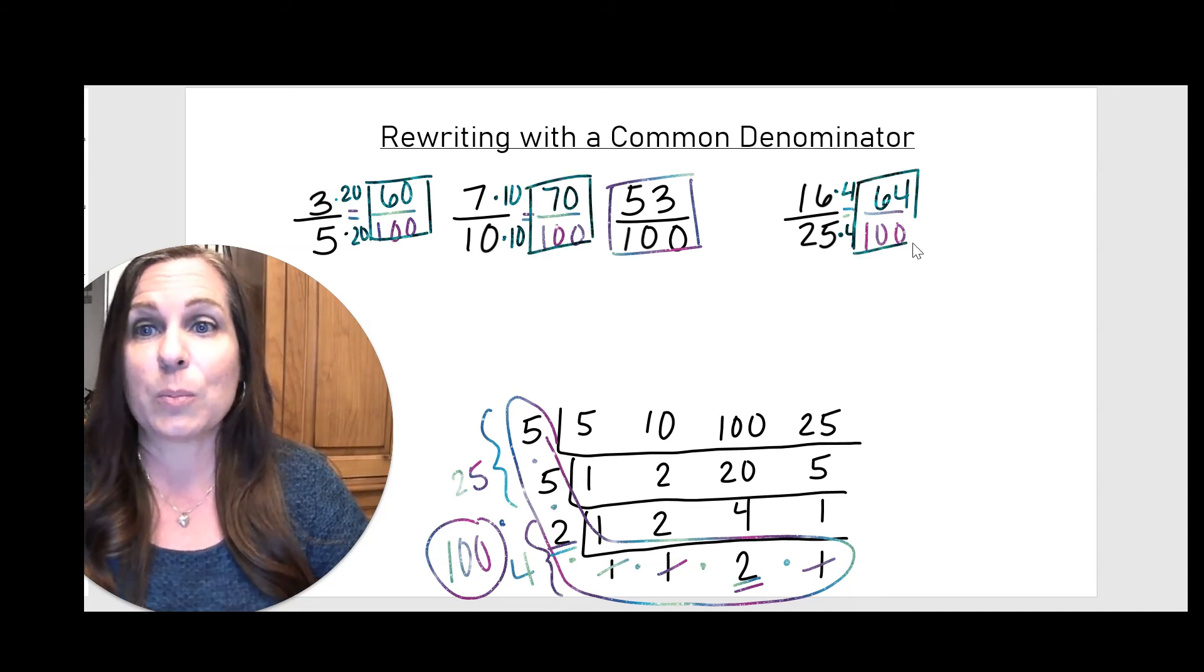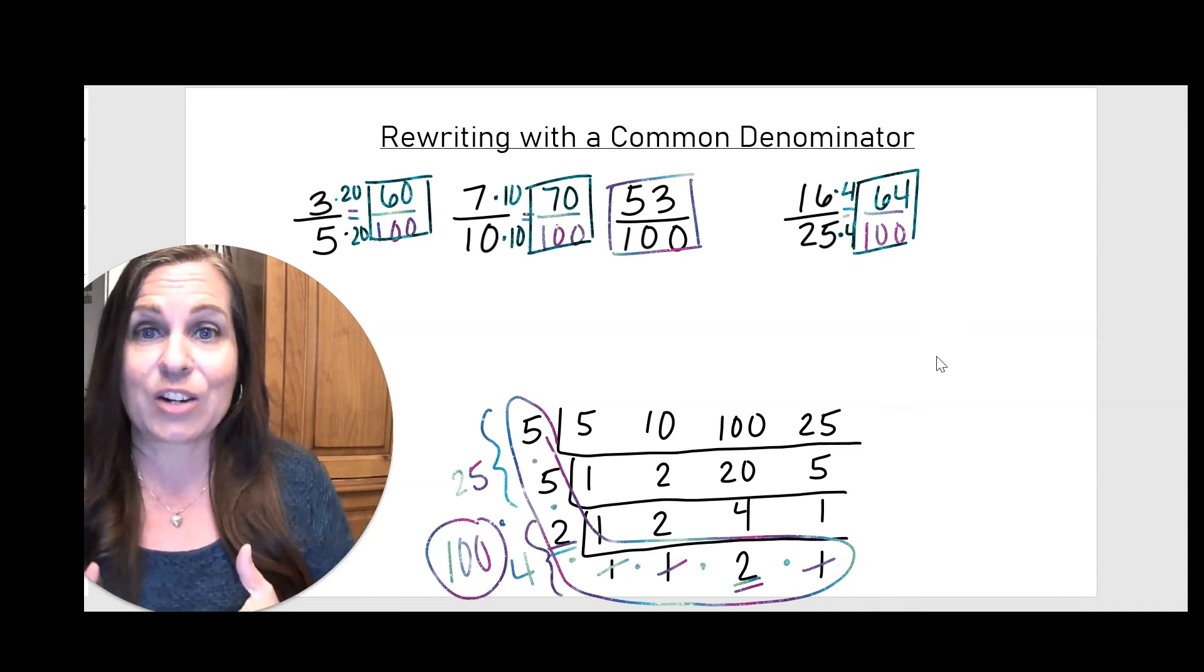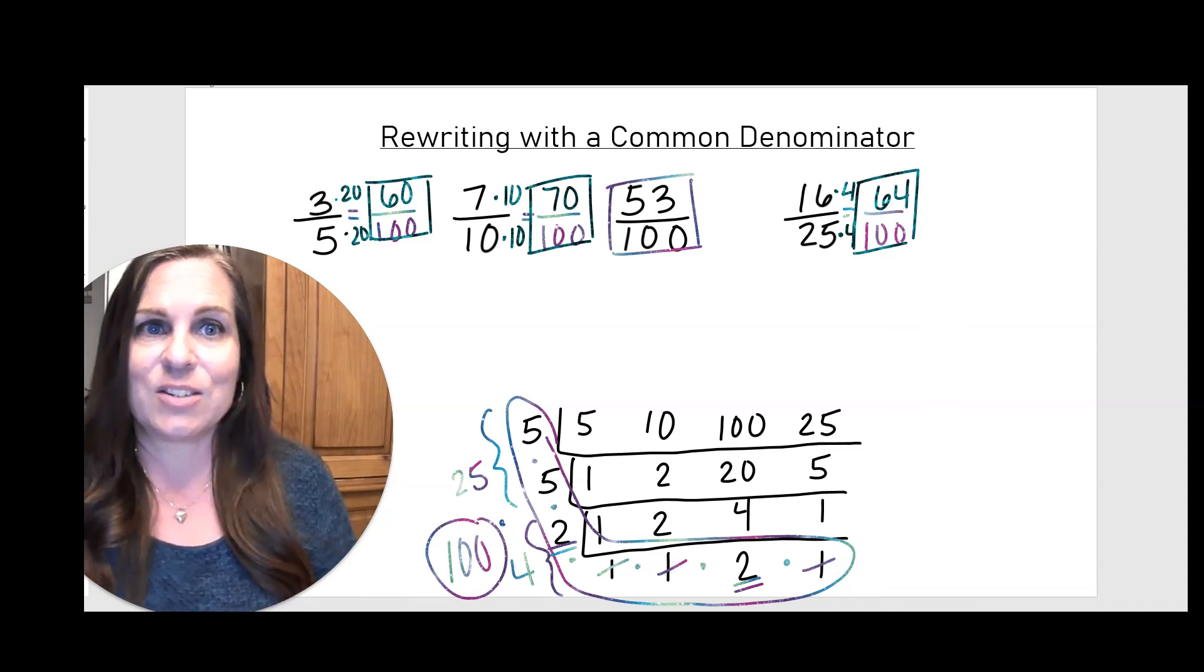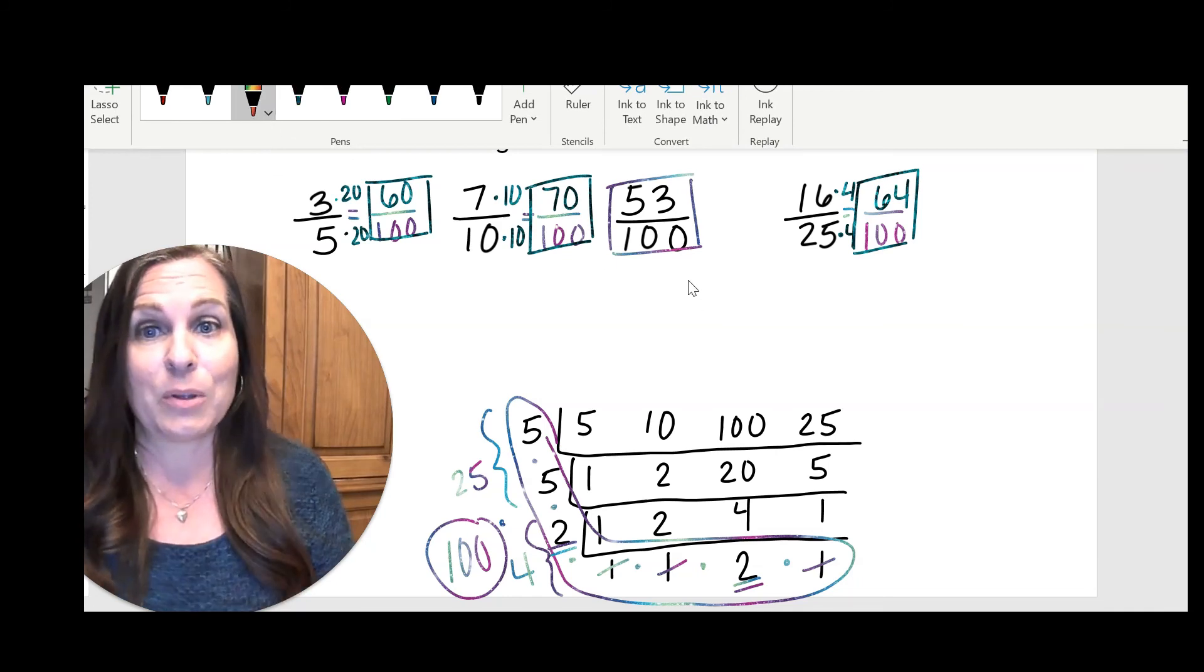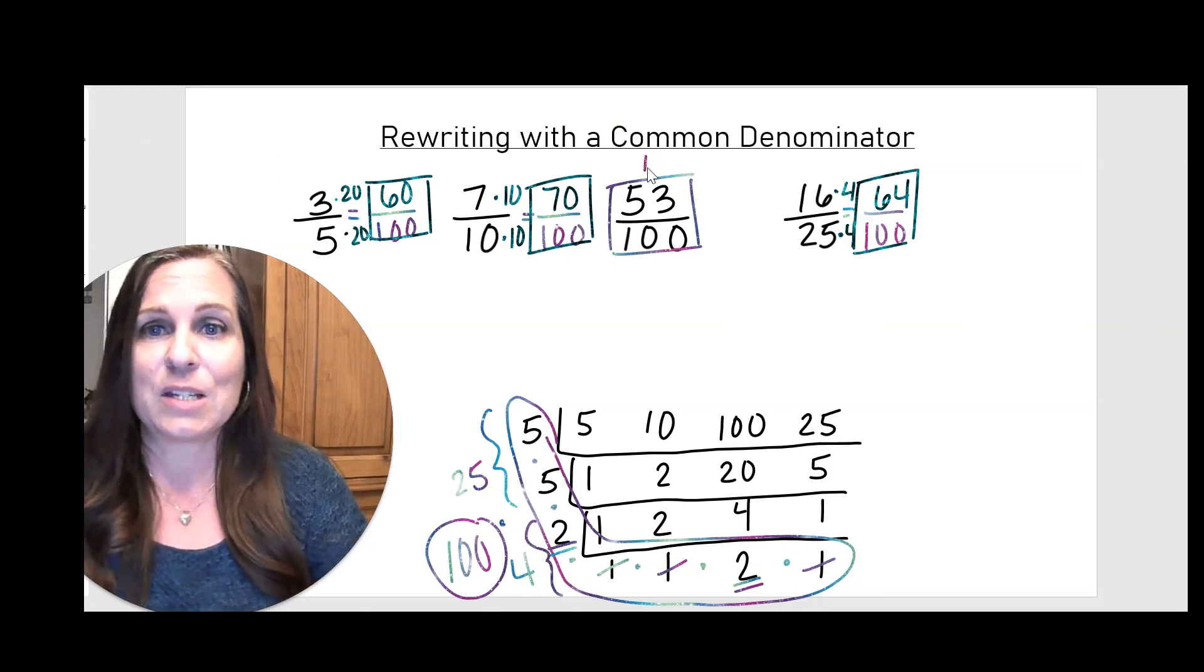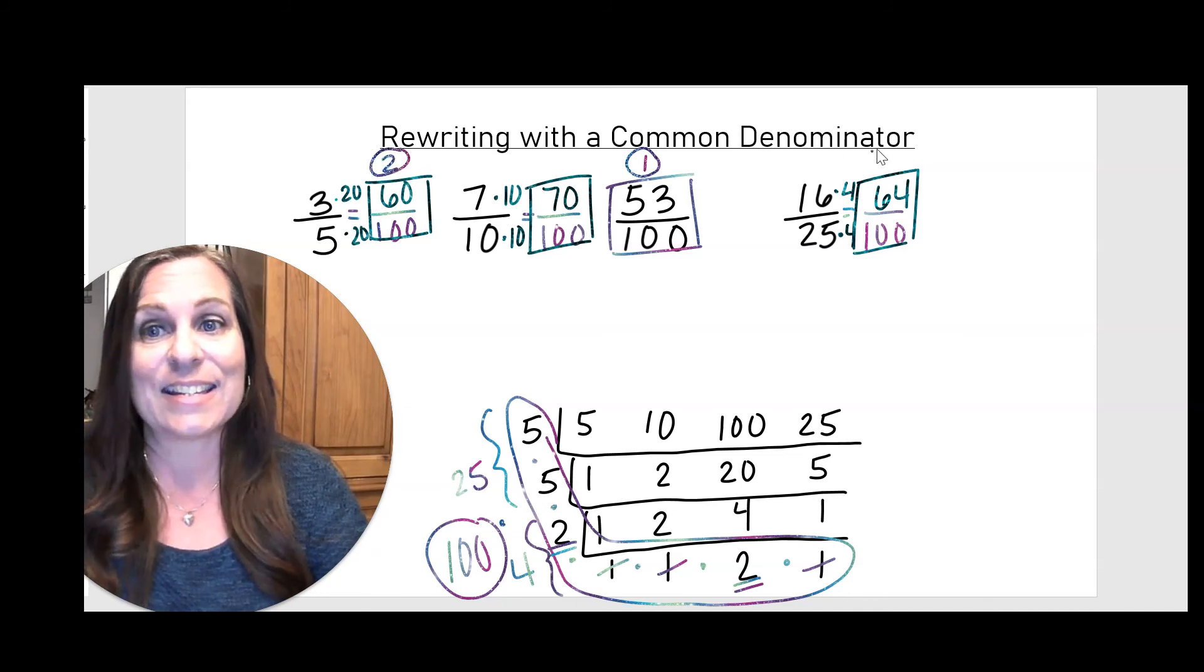So if the goal was to put these original fractions in order, I can do that now. All I have to do is look at the numerators and put those in order. So 53 is the smallest, next in line would be 60, and then 64, and then 70.